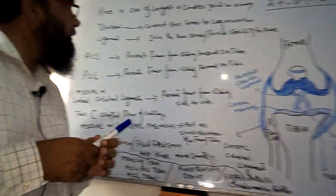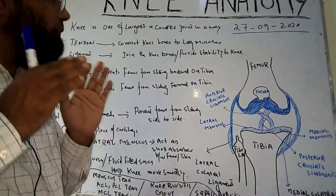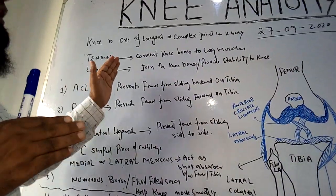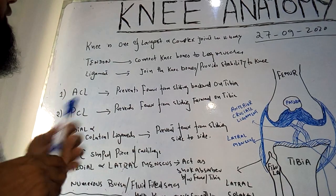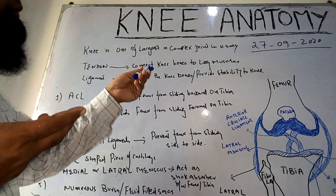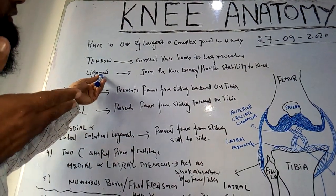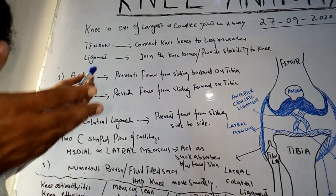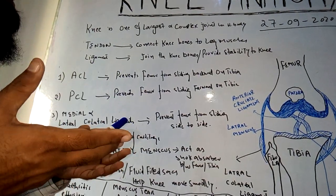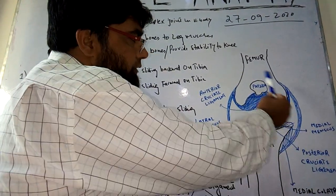We will discuss three topics. First of all, the knee is one of the largest and most complex joints in the human body. First, we will discuss tendons — tendons connect the knee bones to the leg muscles. Secondly, ligaments play a very important role; ligaments join the knee bones and provide strength and stability to the knee.